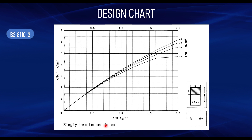You can use the singly reinforced beam design chart to design a slab, because a slab is designed like a beam — the only difference is you take the width of the slab as one metre. For beam design, you first need to categorize your beam as singly reinforced or doubly reinforced, which is done by determining the k-factor. Using BS 8110, the k-factor has a value of 0.156. If k is greater than 0.156 the section is doubly reinforced; if less, you can design it as singly reinforced.